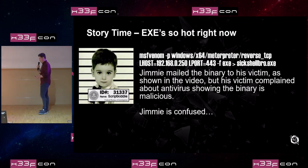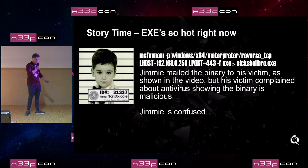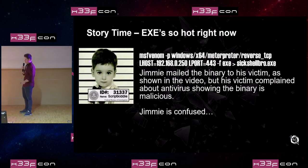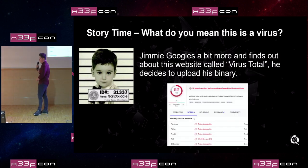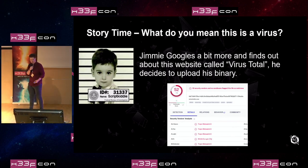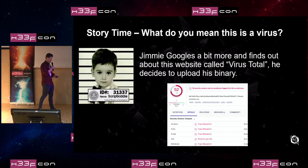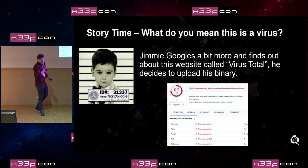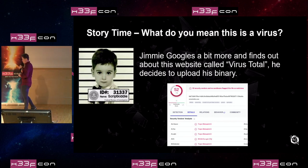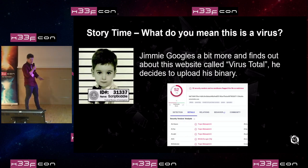Jimmy the Skid Johnson is new to pen testing. He was doing some research on the internet and found a YouTube tutorial on how to generate a meterpreter payload using MSF Venom in the Metasploit framework. He followed the steps, generated his first payload, sent it to a victim — but the victim's antivirus flagged it as malicious. Jimmy was confused because it worked in the YouTube video.